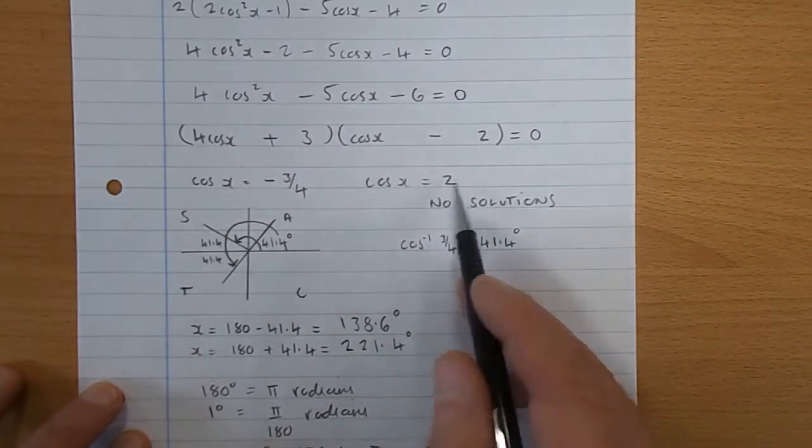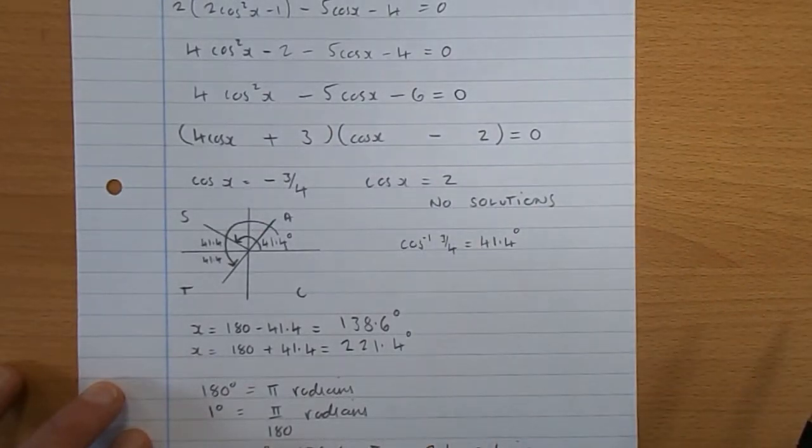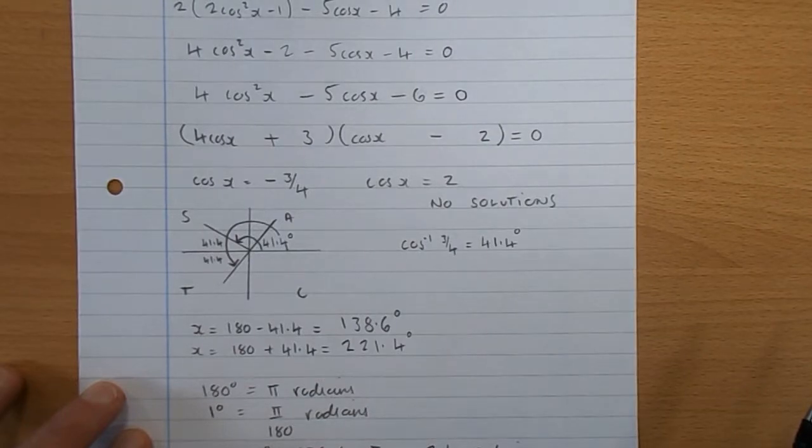Incidentally, cosx equaling 2 has no solutions. Cos doesn't go up to 2, just like sine, it just goes up to 1.